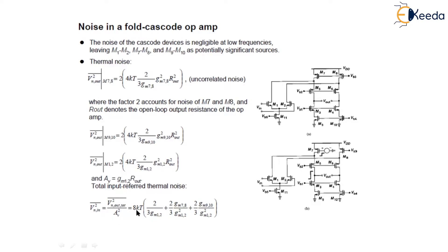Again, which is given as 8KT in brackets: 2/(3Gm1-2) plus 2Gm7-8/(3Gm²1-2) plus 2Gm9-10/(3Gm²1-2).